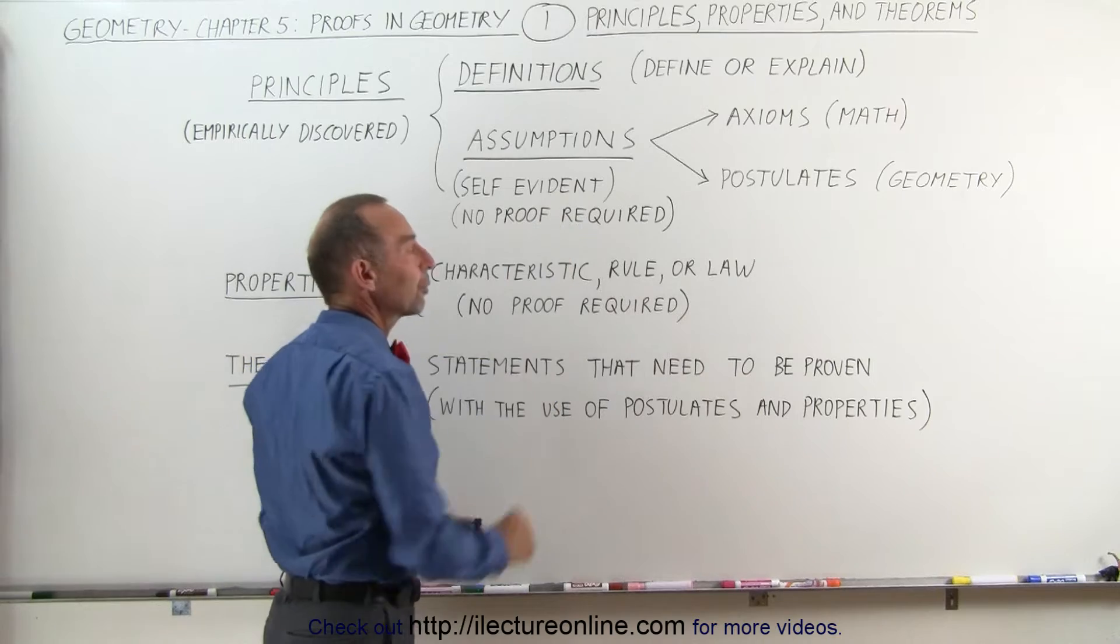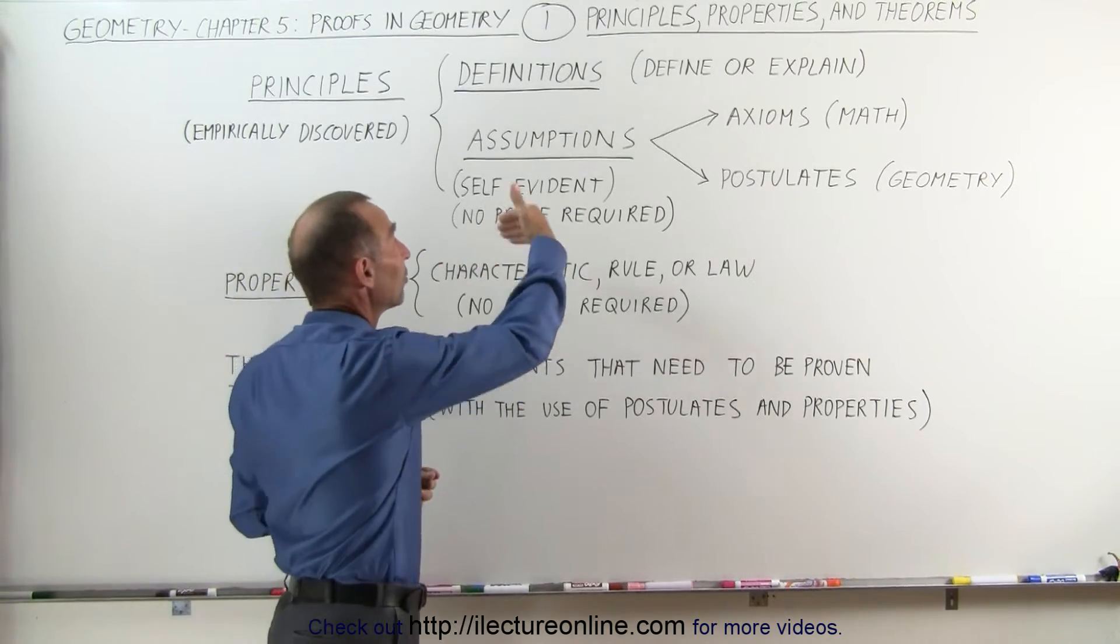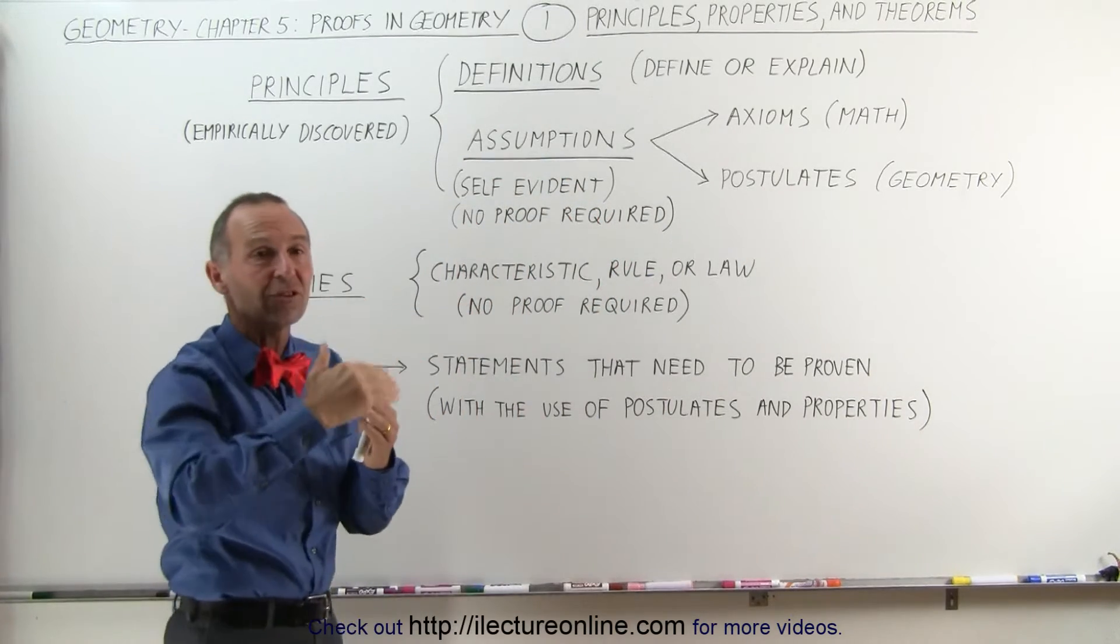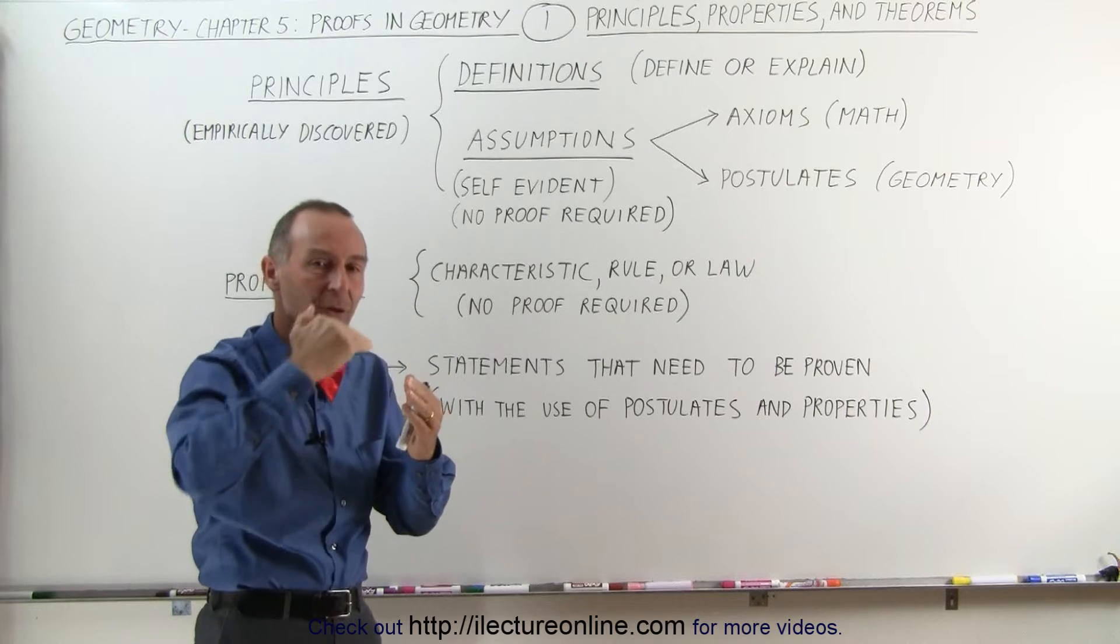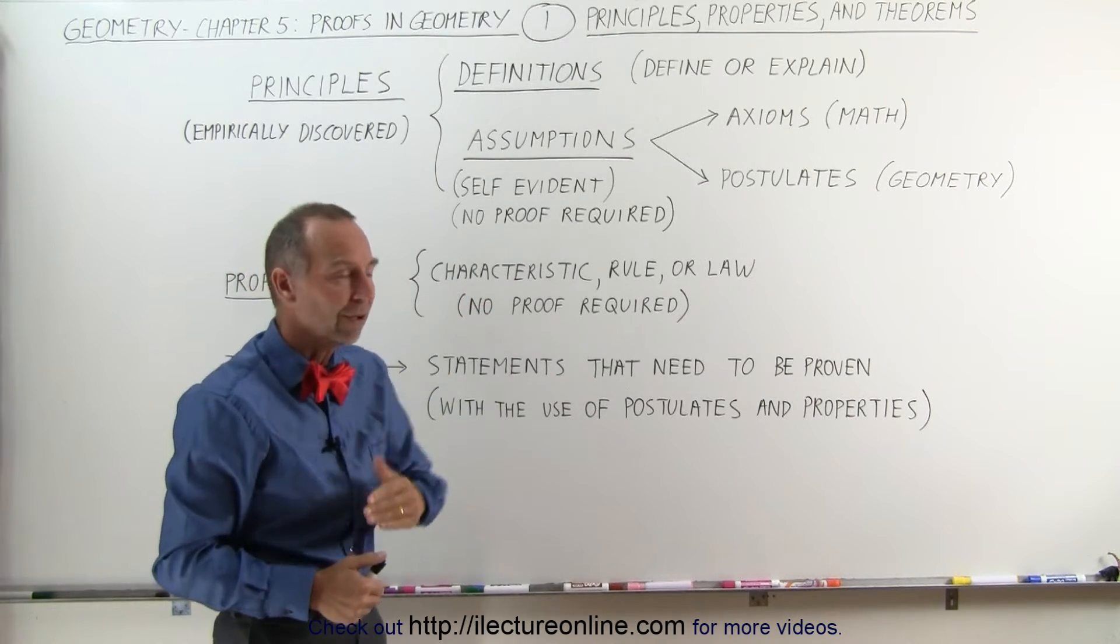Again, no proof required. We're simply going to state them. Now, in order to do proofs, you do have to bring up these assumptions called postulates in geometry to show that, yes, you can say that from A, you can go to B, you can go to C, you can go to D, based upon these postulates or based upon these definitions.